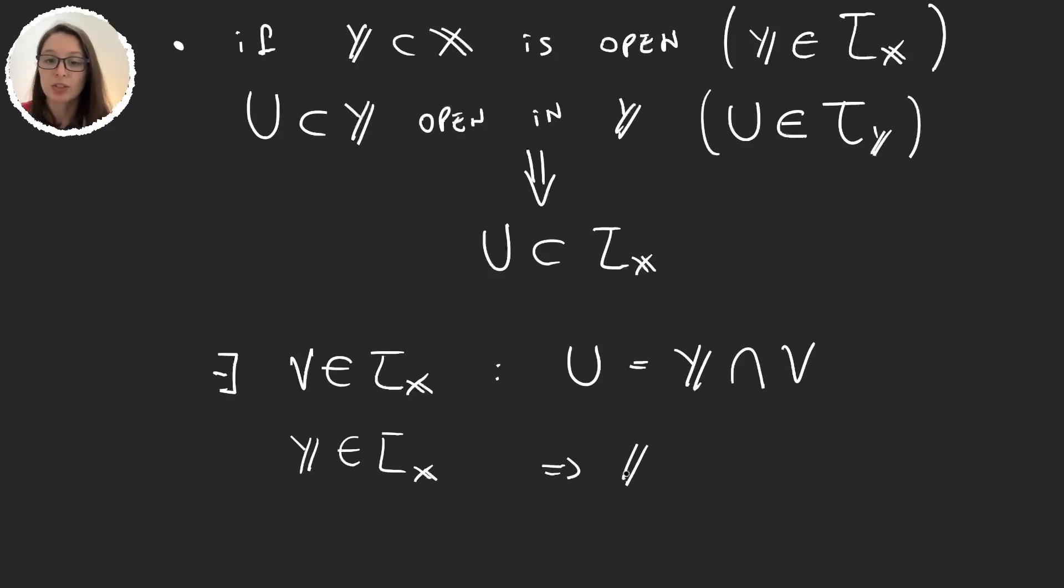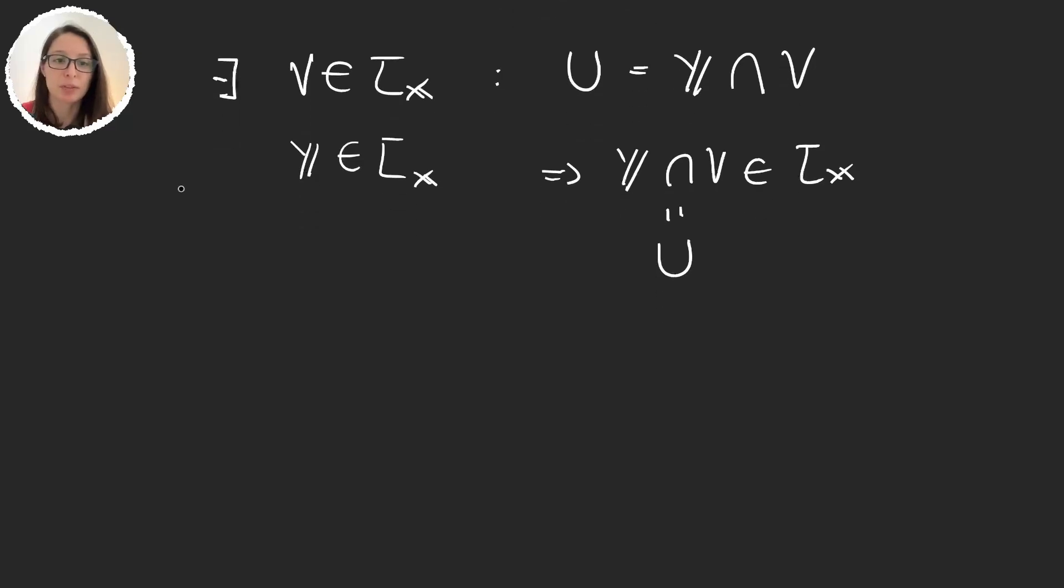So we have two elements in the X topology, their intersection is also going to be in the X topology. But the intersection, I just said, it was U. So U is an element in the X topology. Very simple. Now let's see another property, and this one could be very useful.